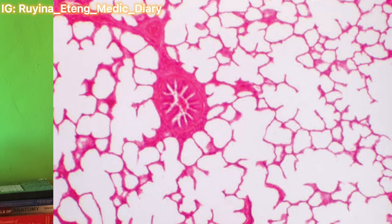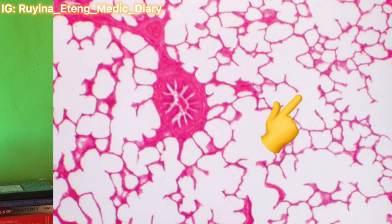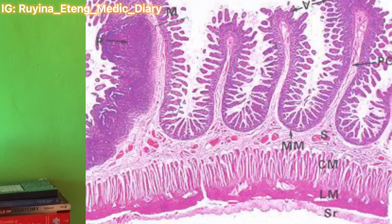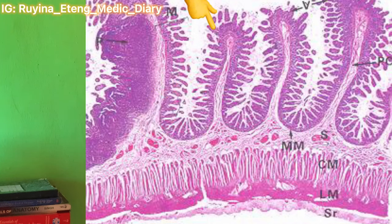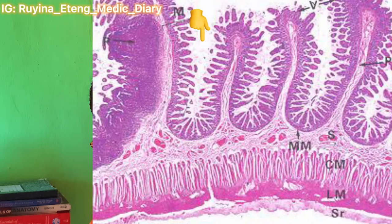When you're able to pick out the Haversian system, you know that is bone. When you see a lung tissue, look out for white clear spaces — those are the alveoli. When you see the small intestine, you'll see simple columnar epithelium. Depending on the part shown, you'll see villi or the crypt of Lieberkühn.